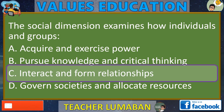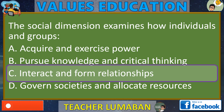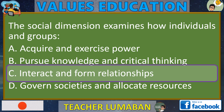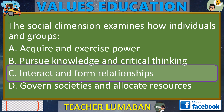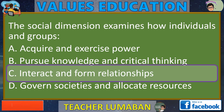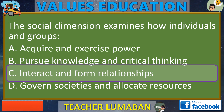Explanation: The social dimension refers to the aspect of human life that involves interactions and relationships between individuals and groups. It examines how individuals and groups interact with one another, form relationships, and navigate social structures. This dimension explores social behaviors, norms, roles, and the dynamics of human interaction. Ang dimensyong panlipunan ay tumutukoy sa aspeto ng buhay ng tao na kinapapalooban ng interaksyon at relasyon sa pagitan ng mga individual at grupo. Sinusuri nito kung paano nakikipag-ugnayan ang mga individual at grupo sa isa't isa, bumubuo ng mga relasyon, at nag-navigate sa mga istrukturang panlipunan.